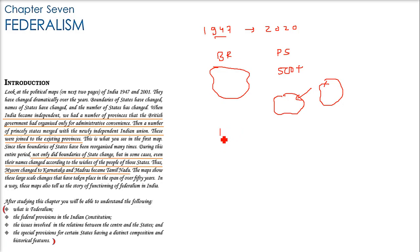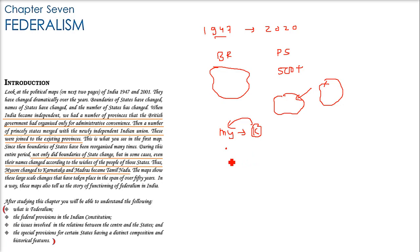For example, Mysore was changed to Karnataka. Mysore is now just a city in Karnataka, but Karnataka was previously called Mysore — that big region was Mysore. Similarly, Madras is now called Tamil Nadu. The whole Tamil Nadu previously was called Madras, and the city of Madras has also changed to Chennai.